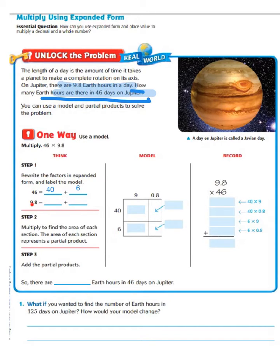Now we have to look at our 9 and 8 tenths. We know that 9 and 8 tenths equals 9 ones and 8 tenths. So if we come over and break those apart, those go horizontally — we have our 9 ones and our 8 tenths. Our next step is to multiply to find the area of each section. The area of each section represents a partial product.